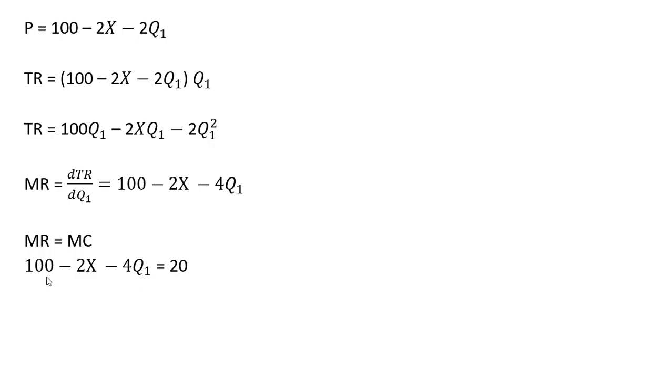I'm going to subtract 20 from both sides, and then move this 4Q subscript 1 over to the other side. So doing that, 100 minus 20 is 80. And now I'm just going to divide through by 4. So 80 divided by 4 is 20, and 2 divided by 4 is just one half or 0.5.